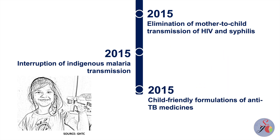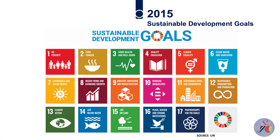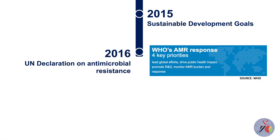The first-ever child-friendly formulations of anti-TB medicines — water-dispersible tablets — were introduced in 2015, with the goals of enhancing adherence to and completion of treatment and preventing the development of drug resistance. All United Nations member states adopted the 2030 Agenda for Sustainable Development in 2015, which outlined 17 goals consisting of 169 interconnected and ambitious targets.